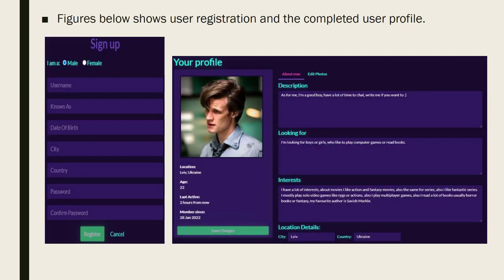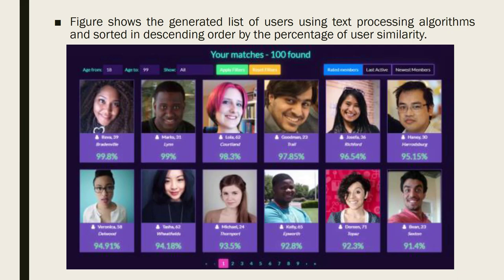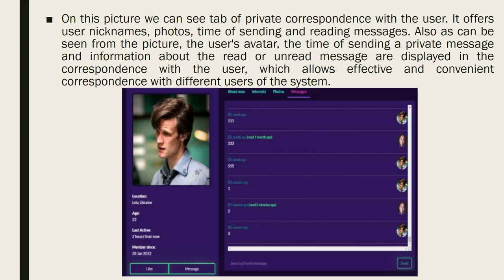On the figures, we can see user registration on the left and the example of a fully created user profile on the right. On these figures, we can see the process of uploading photos into the system. We can upload one or more pictures by dragging them manually or using the file explorer, and also shown are uploaded photos of the users. Users can delete all images except the cover photo, and neural networks also process all images — the image with no face on it is not available for use as the user's cover photo. Here, we can see the generated list of users using text processing algorithms, sorted by the percentage of user similarity. On this picture, we can see a tab of private correspondence with the user, offering user nicknames, photos, time of sending, and reading messages.